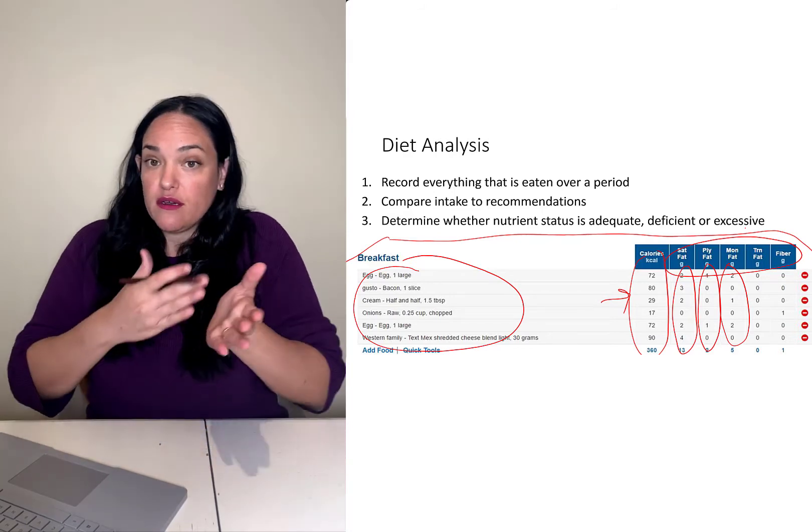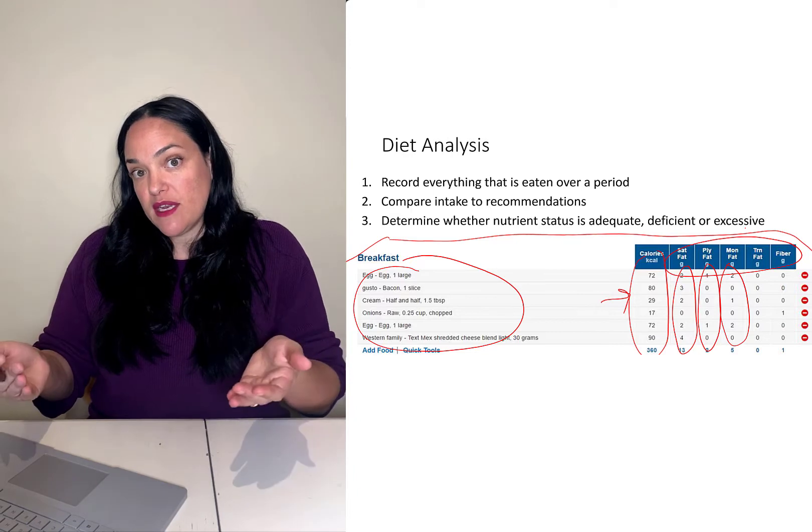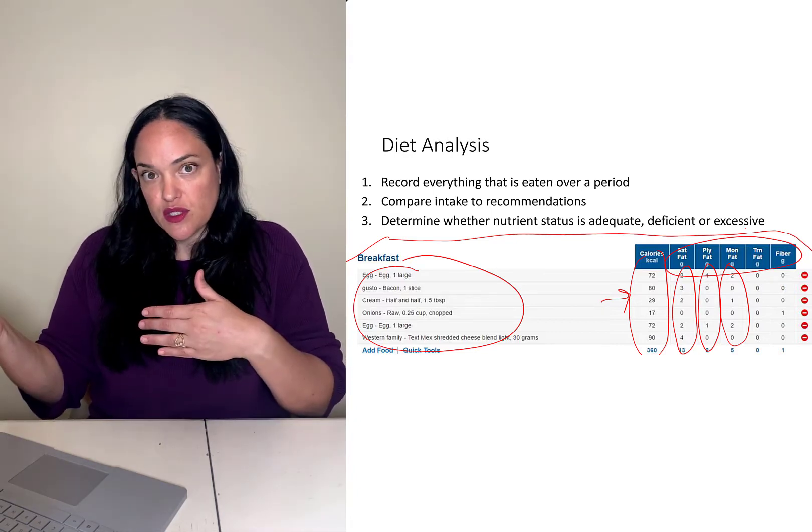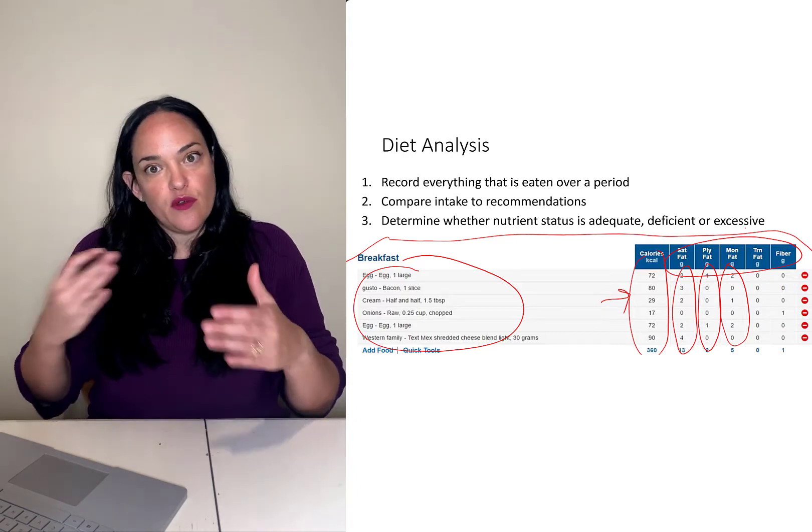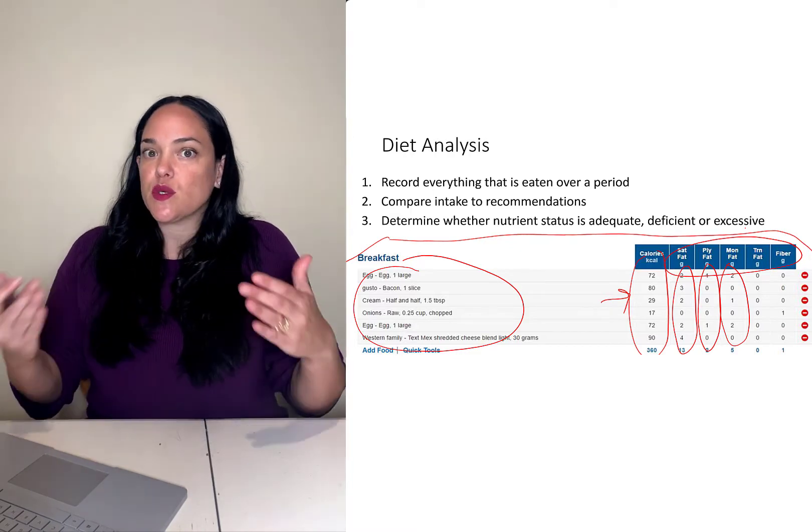So once you've figured out how much you've eaten of each of the nutrients, you're going to compare that to recommended values, and we'll talk about those in the DRI section, and then we'll figure out if our nutrient intake is adequate, inadequate, or excessive.